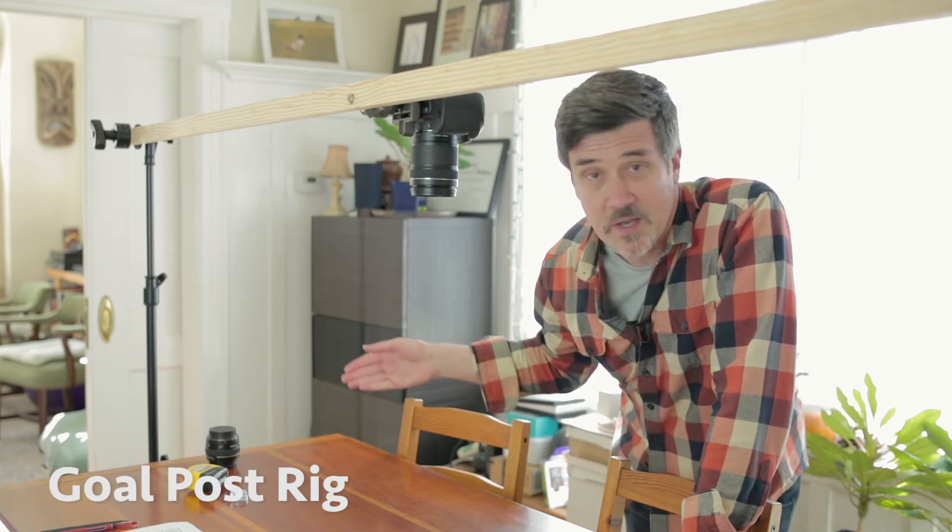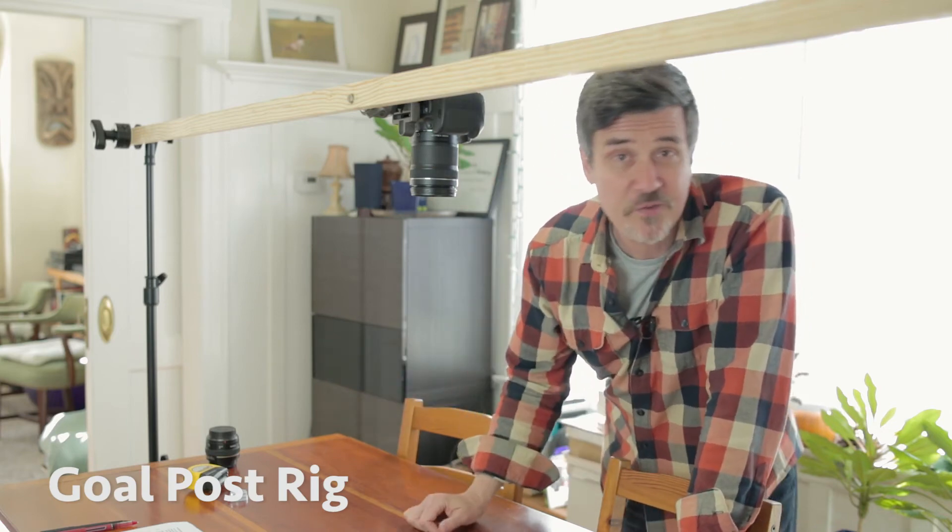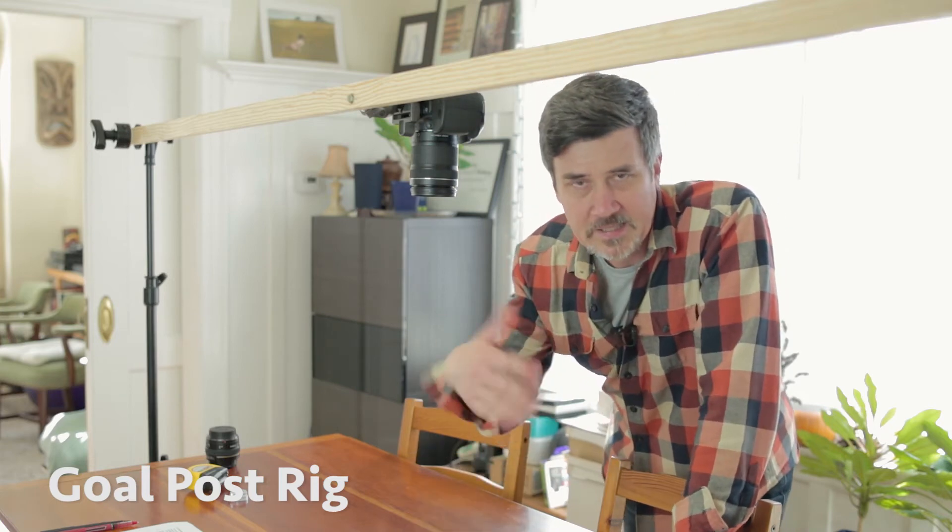An alternative is to build what we call a goal post across the table using two c-stands and a 1-by-2 or 1-by-3 inch piece of batten. It's a bit more stable than the c-stand rig and has less potential for shake.